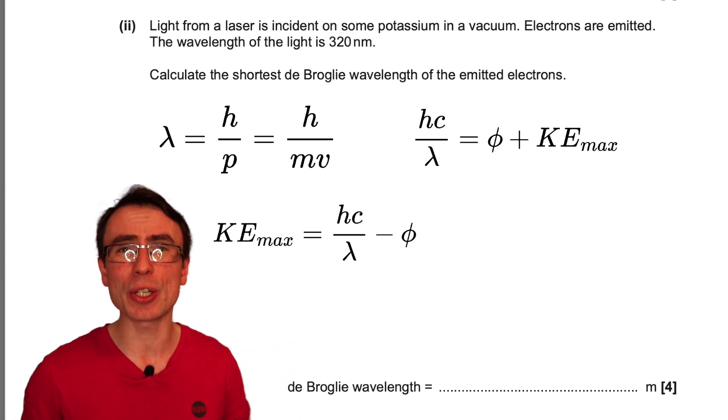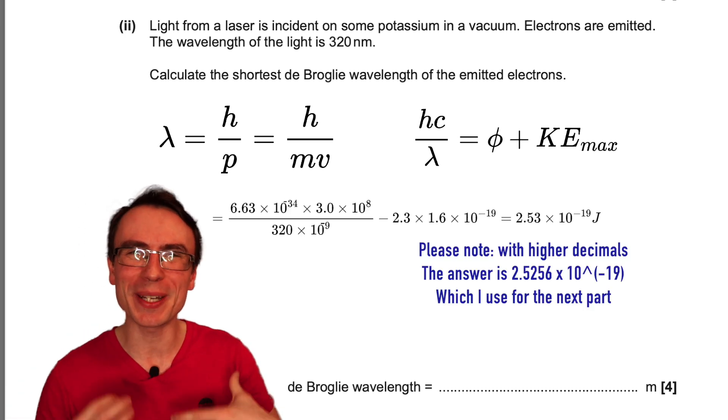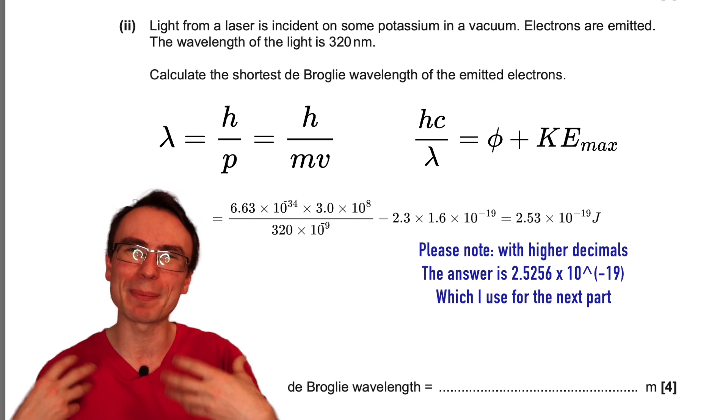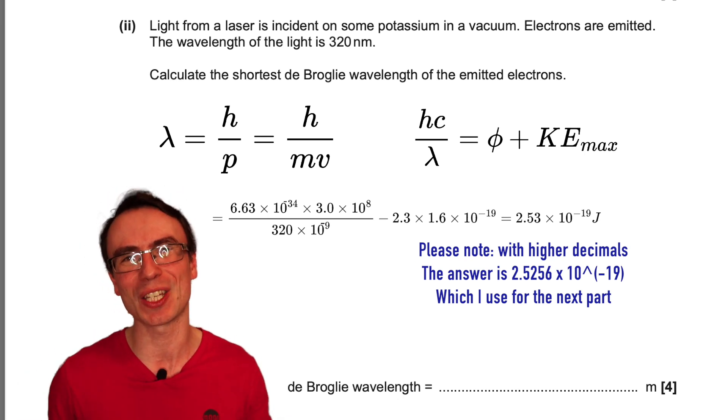Rearranging for the kinetic energy we get that this is equal to hc over lambda take away the work function. Plugging in some numbers we can calculate that the kinetic energy is around 2.5 times 10 to the power of minus 19 joules.